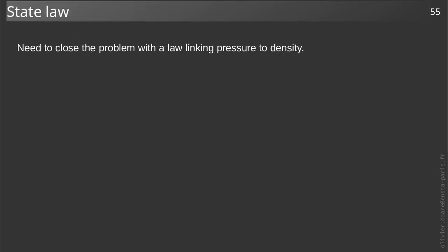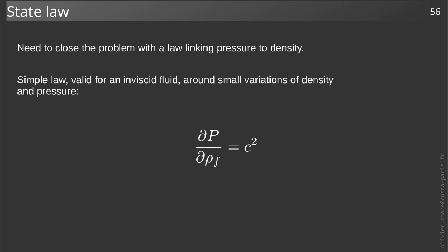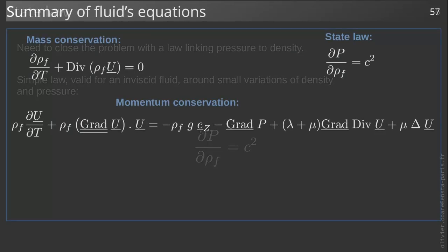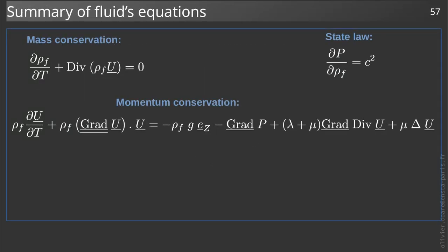So the two balance equations are not sufficient to close the problem. To do so, we introduce the simplest possible law allowing us to link the pressure variation to the density variation. It is a proportionality relationship whose coefficient is noted c-square. Here are finally the conservation equations in the fluid. The conservation of mass, the conservation of momentum, and the state law.